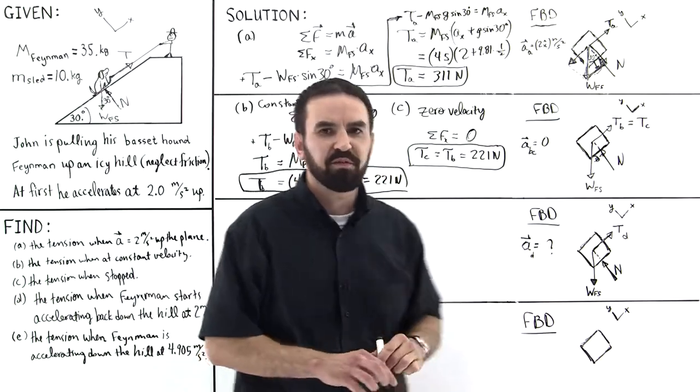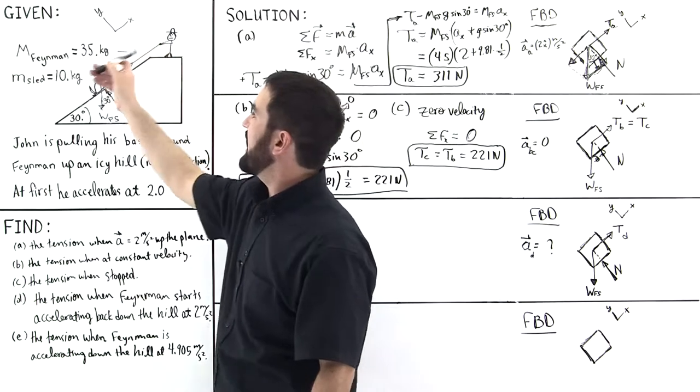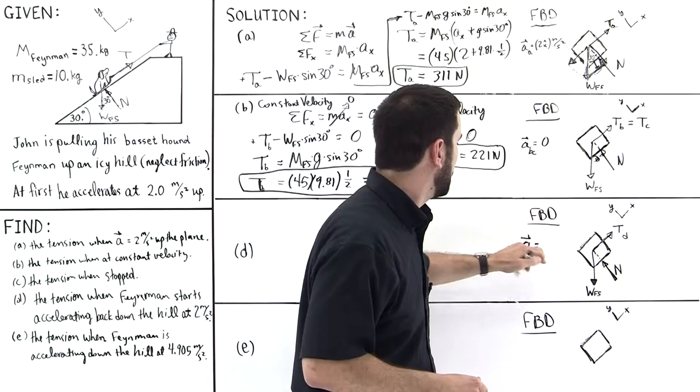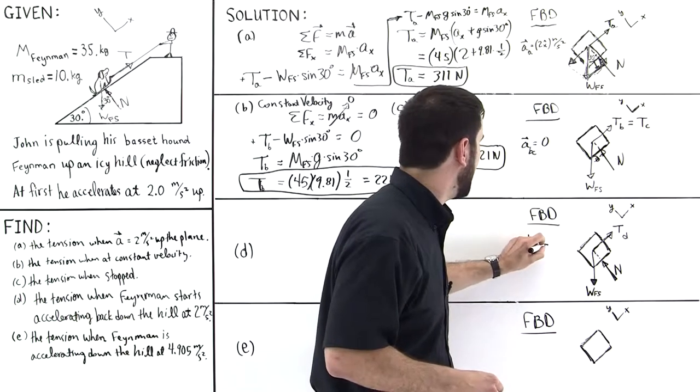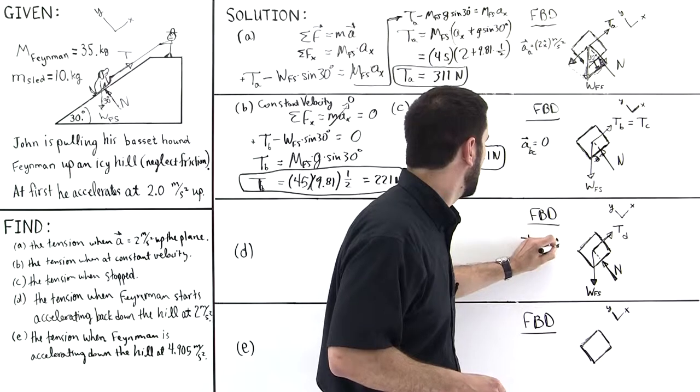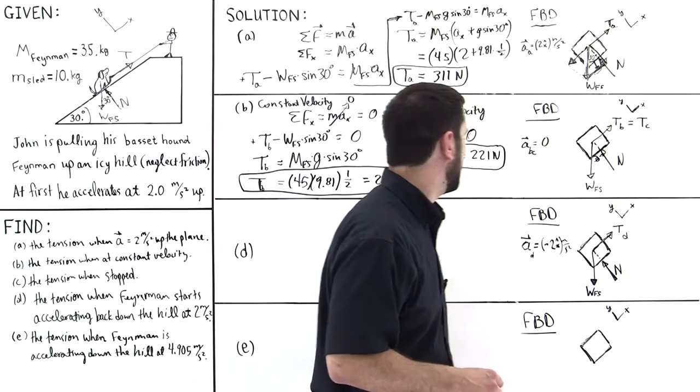And because Feynman is accelerating down the hill, we see that that's in the negative X direction. So the acceleration as a vector will be equal to negative 2 X hat meters per second squared, like so.